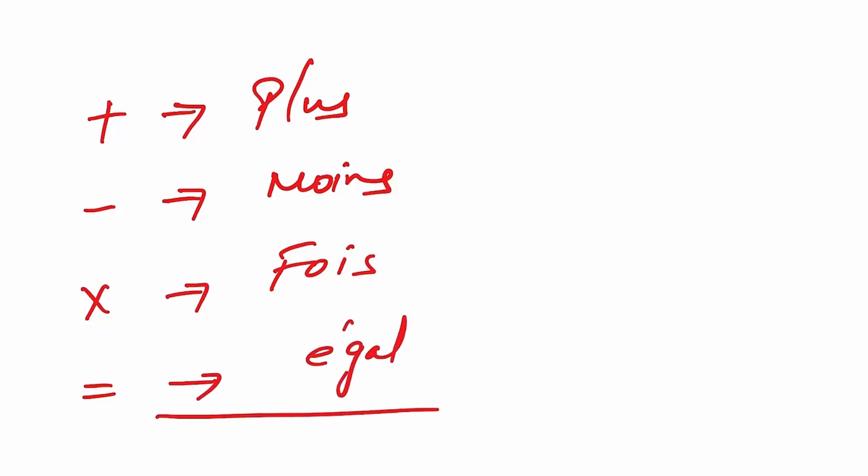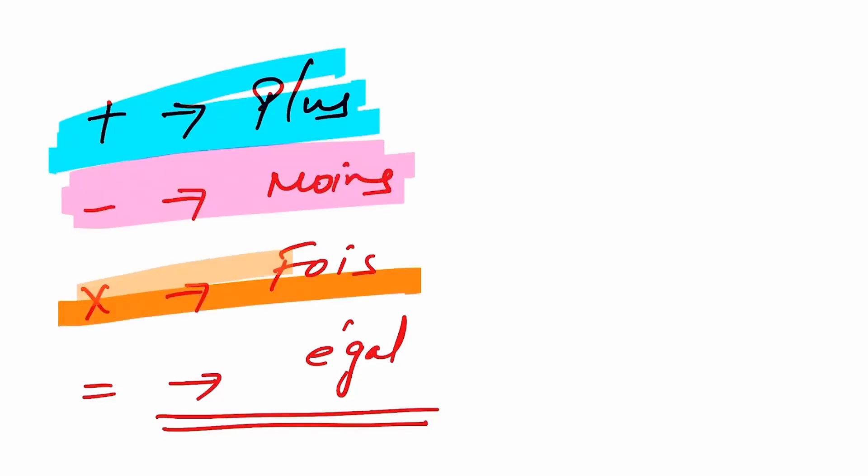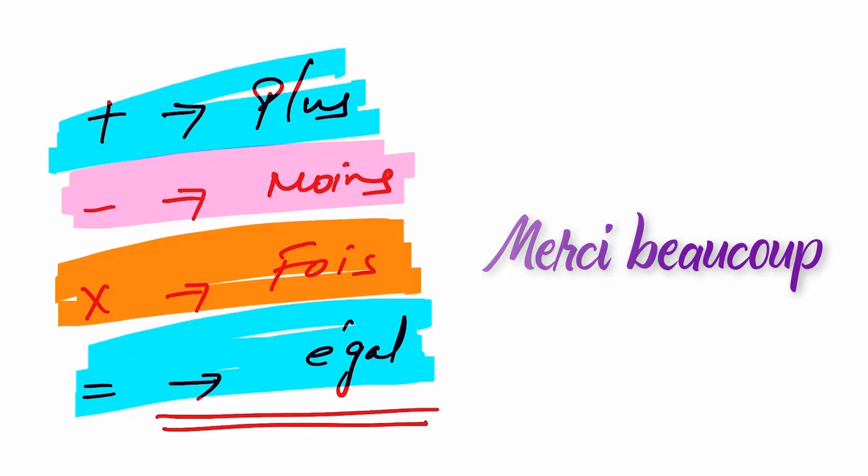Okay, so we have done with these signs: plus, then moins for minus, then fois is multiply, then égale is equal to. So we have done these signs. Merci beaucoup, thanks a lot.